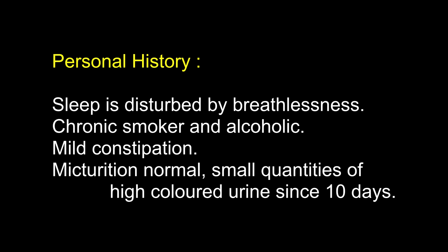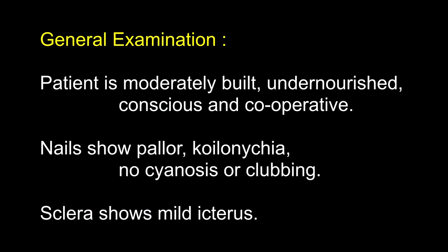The patient is a chronic smoker and alcoholic. Bowels: mild constipation. Micturition: small quantities of high-colored urine since 10 days. On general examination, the patient is moderately built, undernourished, conscious and cooperative. Nails show pallor, koilonychia, no cyanosis or clubbing. Sclera shows mild icterus.